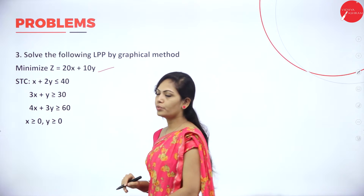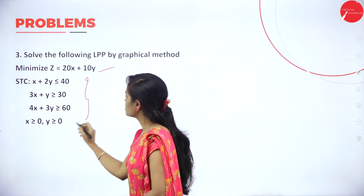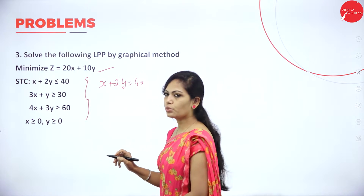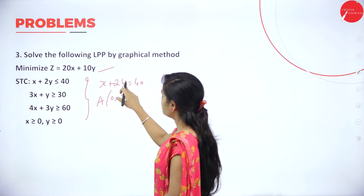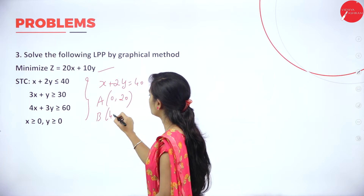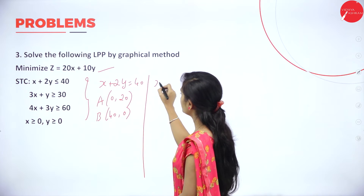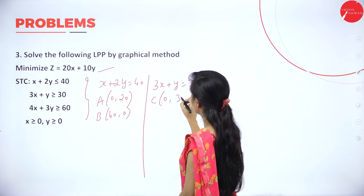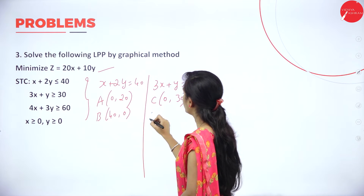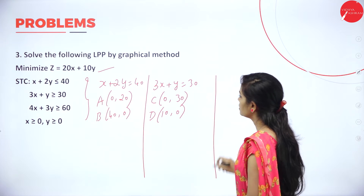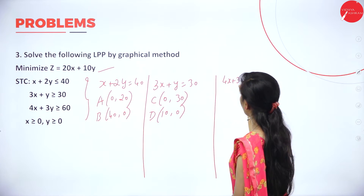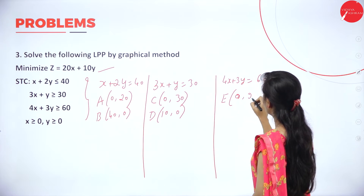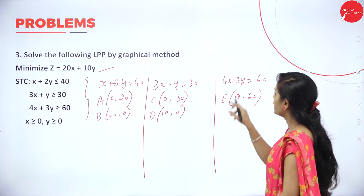The next problem: minimize Z equals 20x plus 10y. We have three different constraints. Convert to standard form. First equation: put x equal to 0, y equals 20, point A is (0, 20). Put y equal to 0, x equals 40, so (40, 0). Second constraint 3x plus y equals 30: put x equal to 0, y equals 30; put y equal to 0, x equals 10, so (10, 0). Third constraint 4x plus 3y equals 6: put x equal to 0, y equals 20; put y equal to 0, x equals 15.